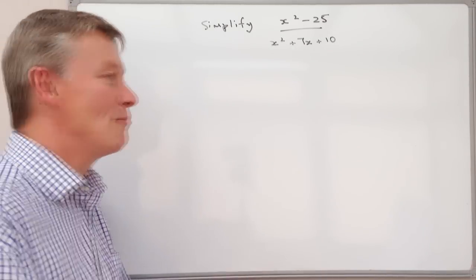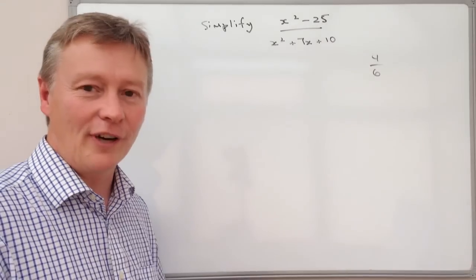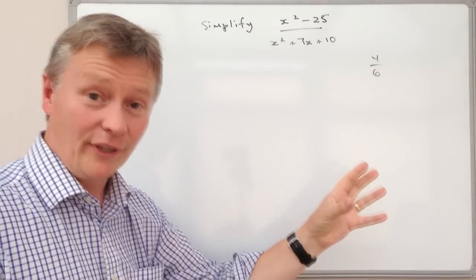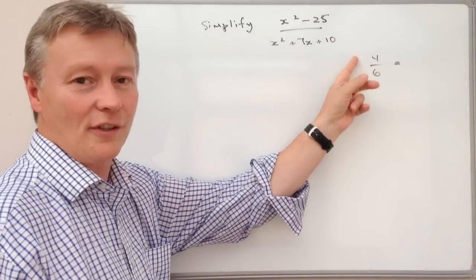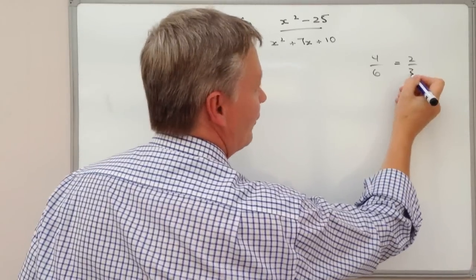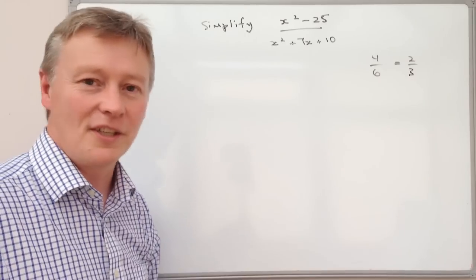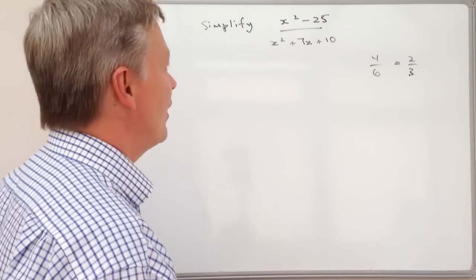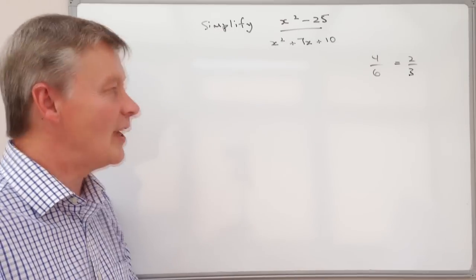So just as a very brief example let's say you've got 4 over 6. Well 4 over 6 can be simplified by dividing the top and bottom by 2. So if I divide 4 by 2 I get 2. If I divide the bottom by 2 I get 3. And it's easier to deal with 2 thirds than it is to deal with 4 sixths. So what we're going to do is use the same sort of principle with this.